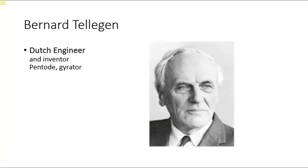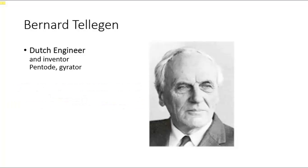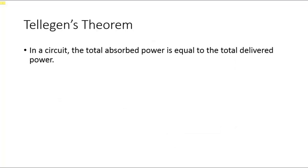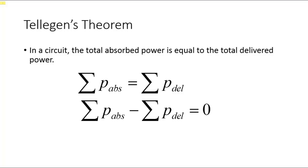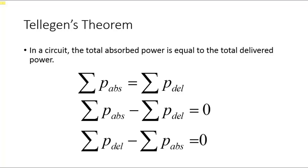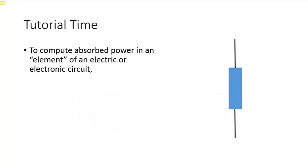This lecture on electric power would not be complete without a visit to the legacy of Bernard Tellegen, a Dutch engineer and inventor, better known in electric circuit theory by his theorem. Tellegen states: in a circuit, the total absorbed power is equal to the total delivered power. If we move terms, we embrace the convention to represent absorbed power as positive and delivered power as negative. In this course, we will use that first convention — absorbed power is positive.